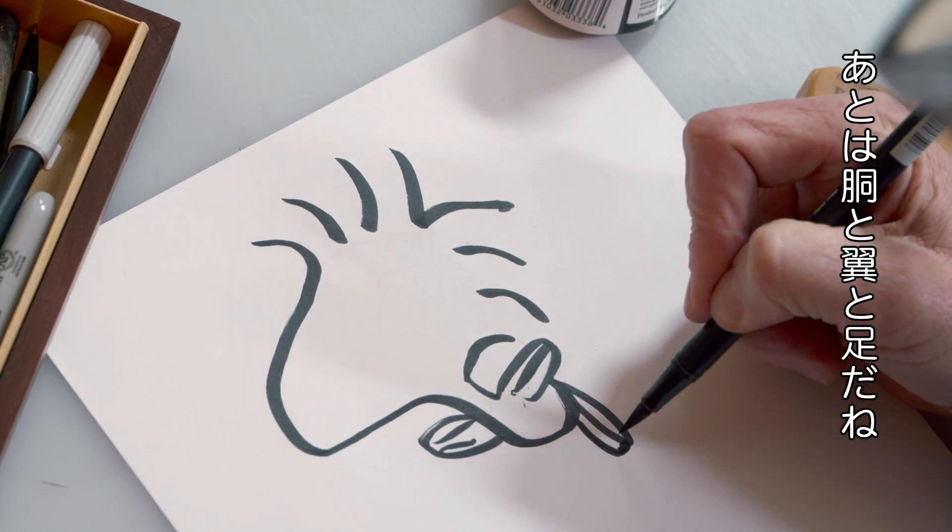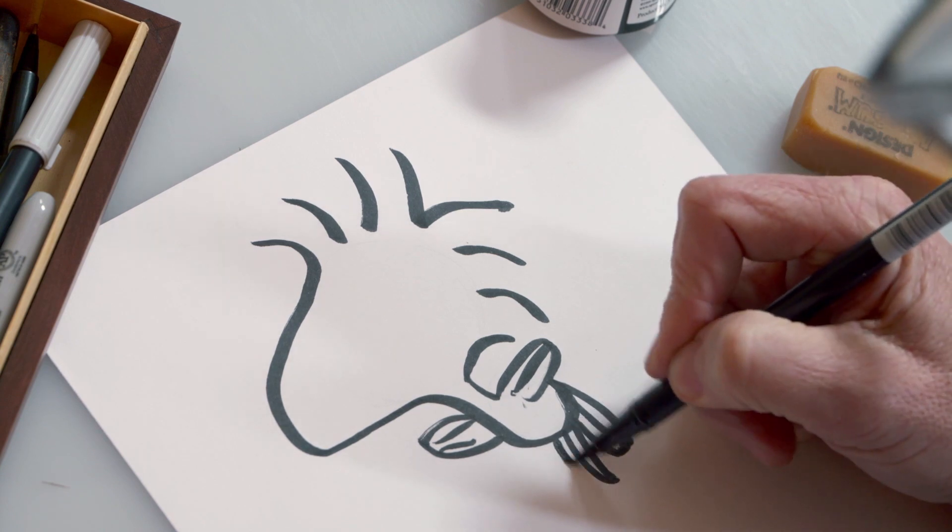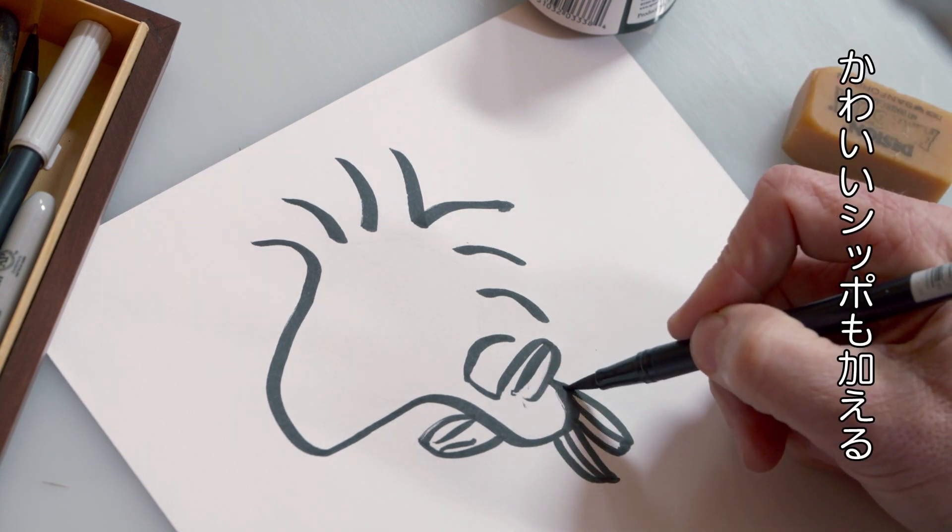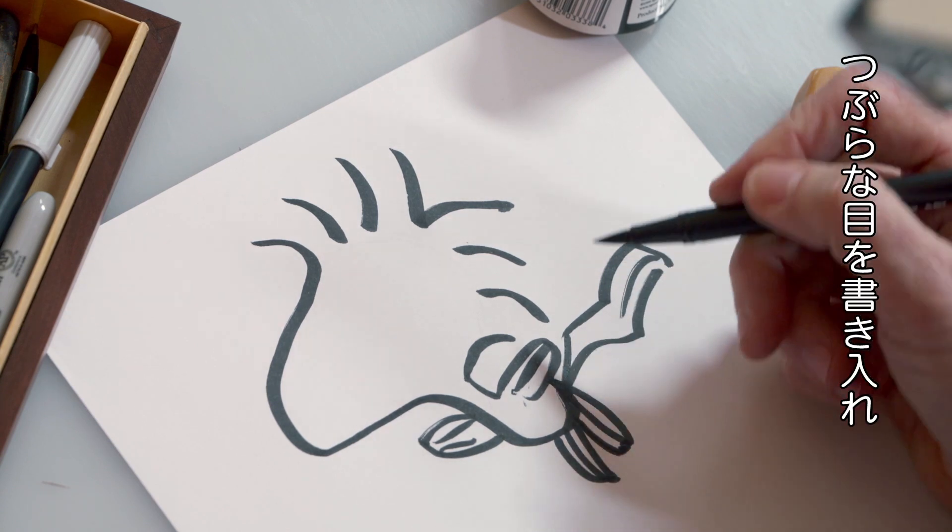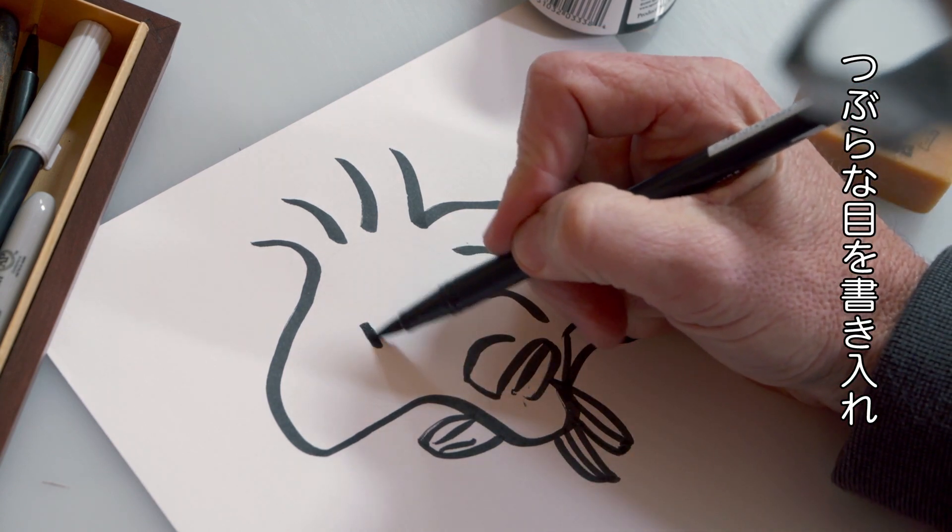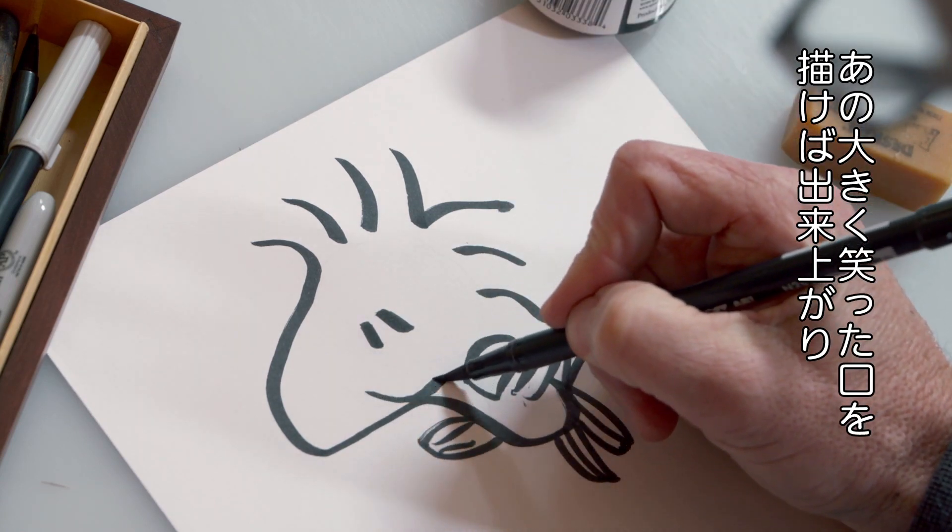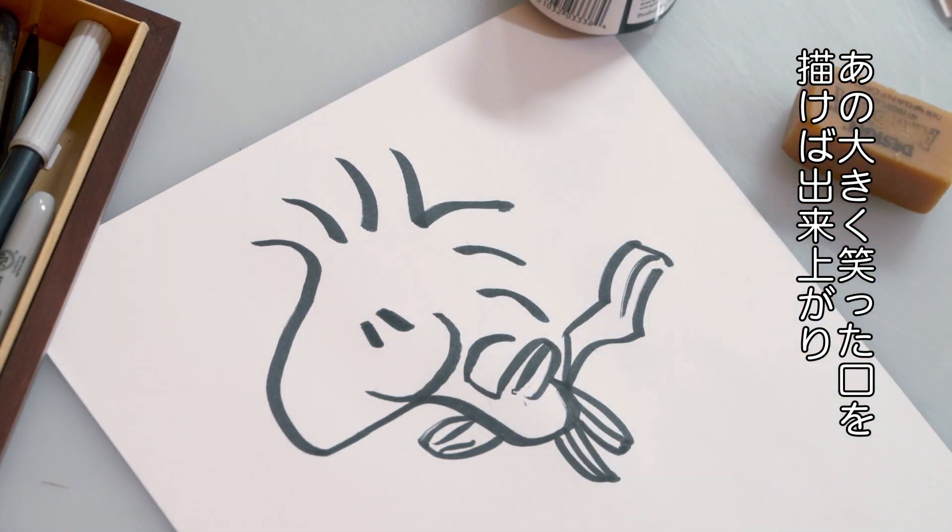His body, wings, and feet make up the other half. Add on his little tail there. Now make a couple of lines for his bright little eyes. Last and most importantly, draw that great big Woodstock smile.